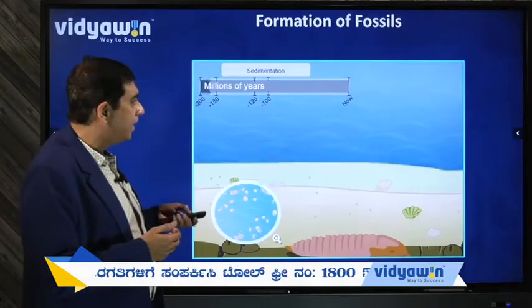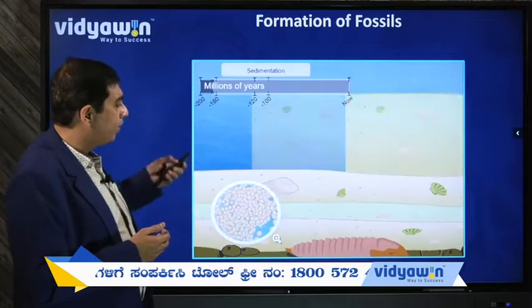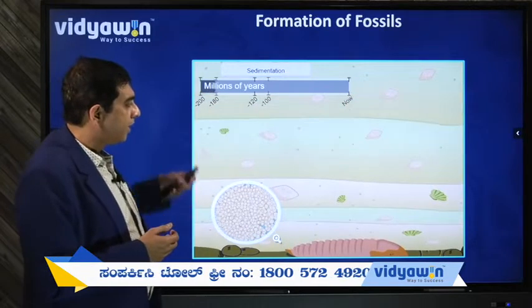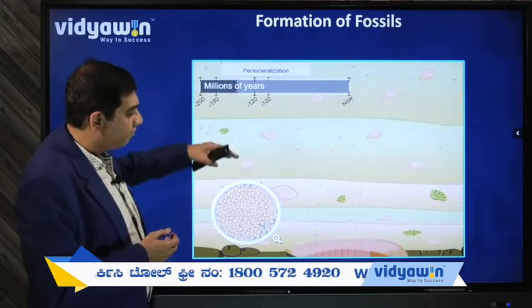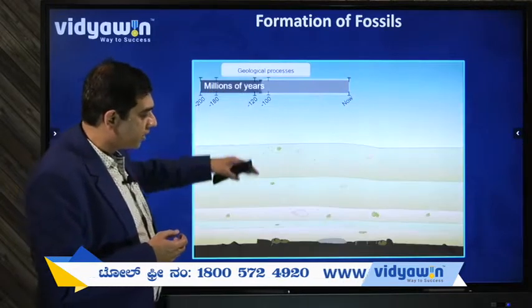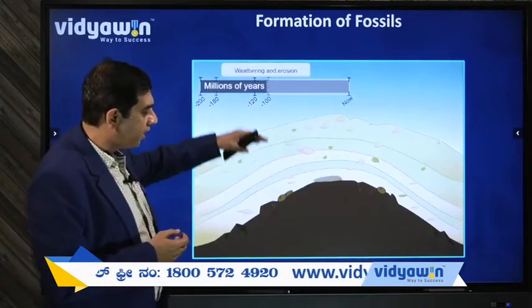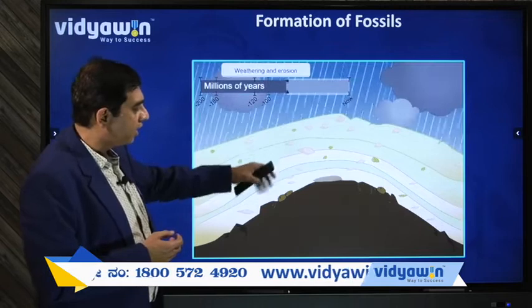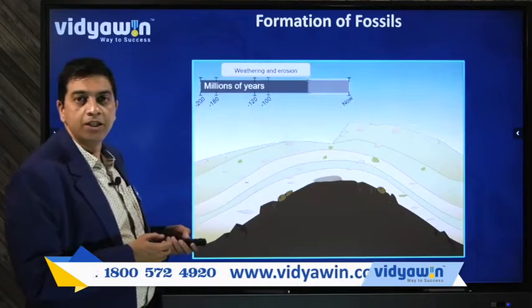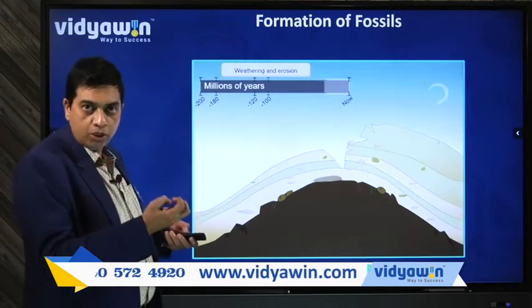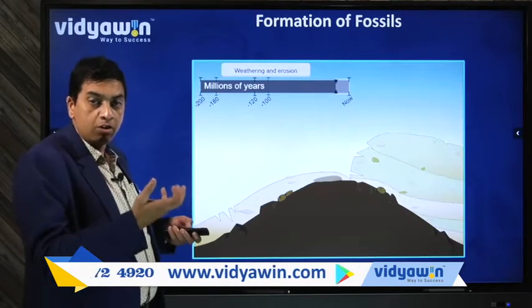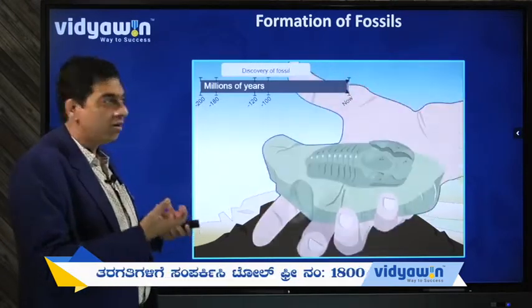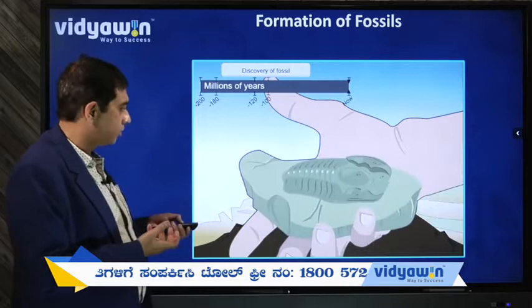Now slowly it died, and over a period of time as compaction occurs, its body gets pressed against the loose soil which later on becomes hard to become a fossil.